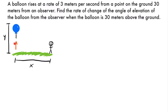Now that we've labeled the distance from the balloon to the observer as x and the height from the ground to the balloon as y, what else do we know? We're told the balloon is rising at a rate of 3 meters per second, meaning y is changing at 3 meters per second. So dy/dt equals 3 meters per second. We also know the balloon rises from a point 30 meters from the observer, so x equals 30 meters. We want to find the rate of change of the angle of elevation, which we haven't labeled yet.